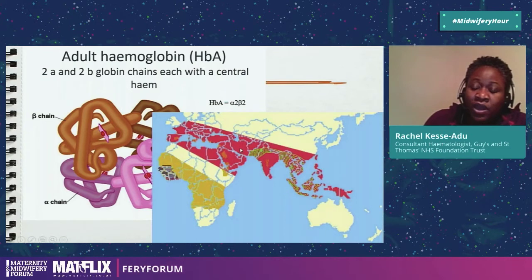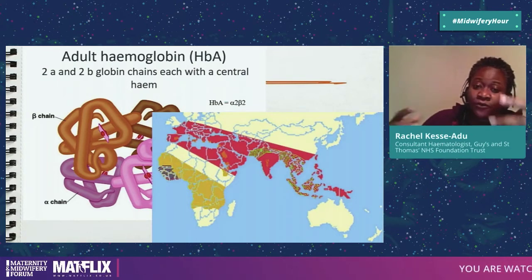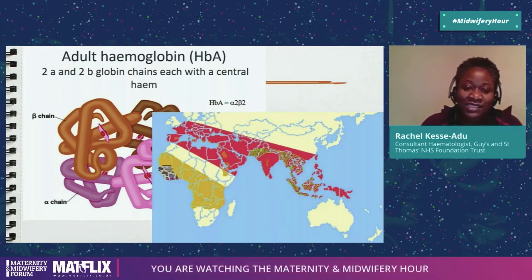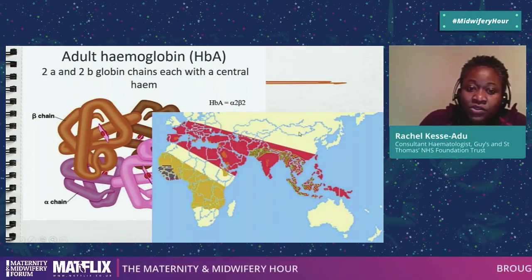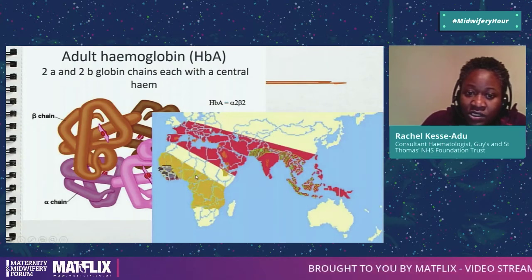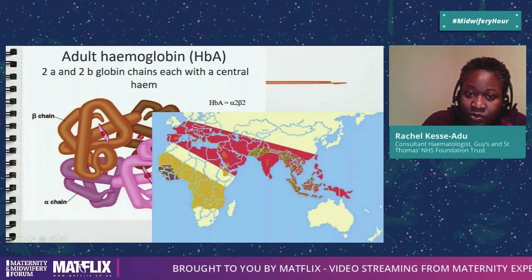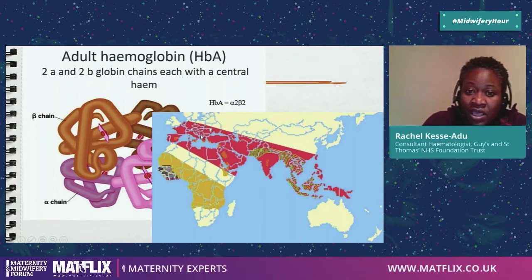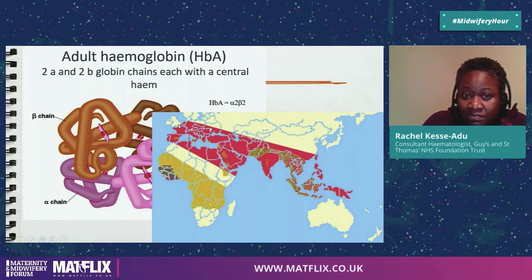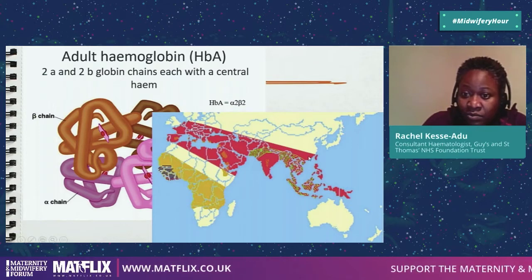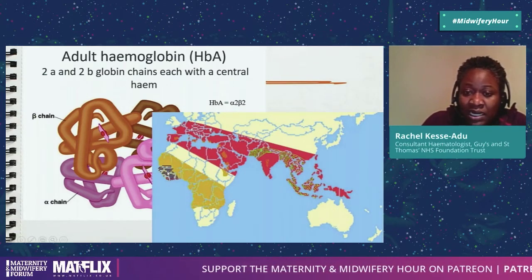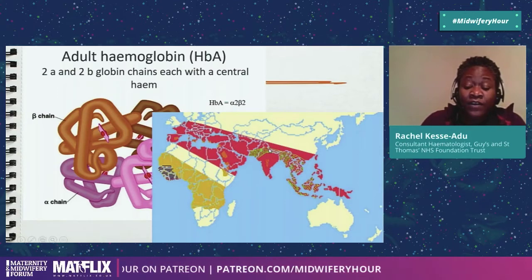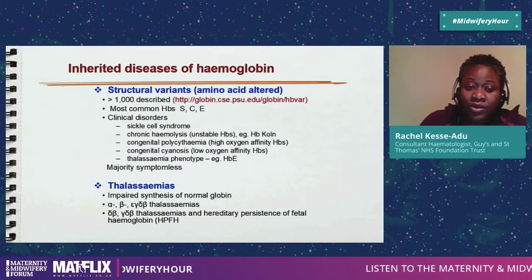This is a map that gives you an idea of where these conditions originated from — not where they currently are entirely, because we've all moved around. The yellow is sickle, largely in Africa, but there are also bits across the Mediterranean, the Middle East, and India. Red represents the thalassemias — a massive stripe across the Mediterranean through the Middle East and into the Philippines and beyond. There's also haemoglobin C disease in blue, and haemoglobin E disease in green.